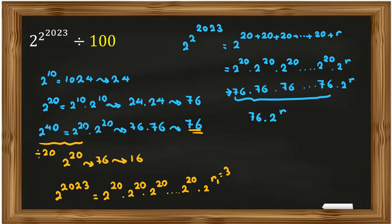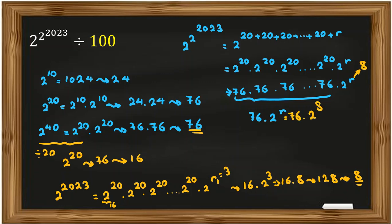So R1 is 3. This means the 2-to-the-20 parts each contribute 16 mod 20 — all of them are 16. So it will be 16 times 2 to the 3, which is 16 times 8, equals 128. The remainder when 128 is divided by 20 is 8. So we've concluded that 2 to the 2 to the 23, when divided by 20, the remainder R is 8. So the final expression is 76 times 2 to the 8.